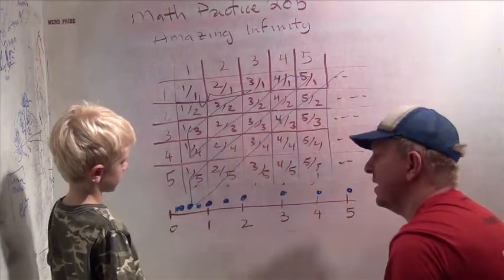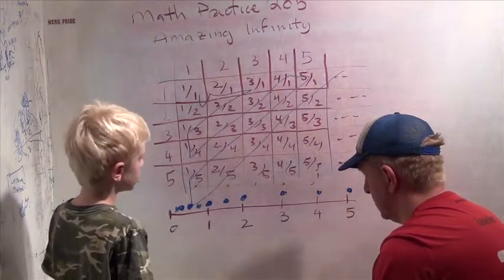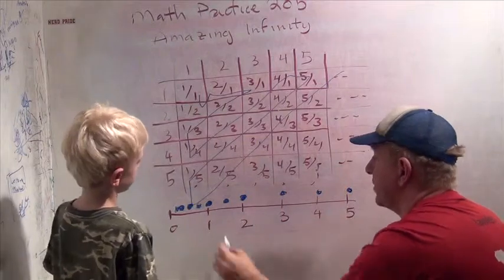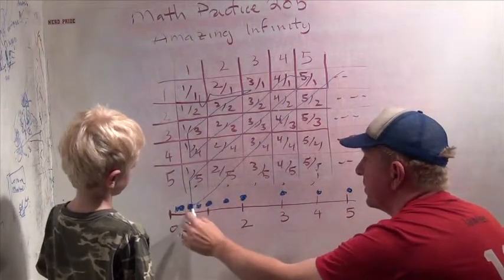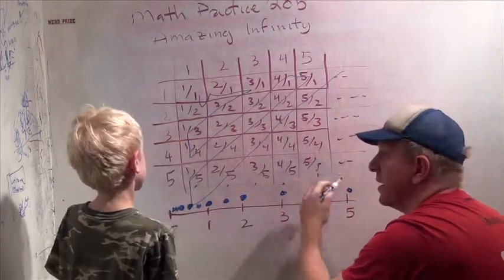4 halves. What's that? 4 halves is 2. So we're hitting some numbers twice, but that's okay. 3 over 3 is 1. 2 fourths is a half. 1 fifth down here. And then we're going to keep going forever.